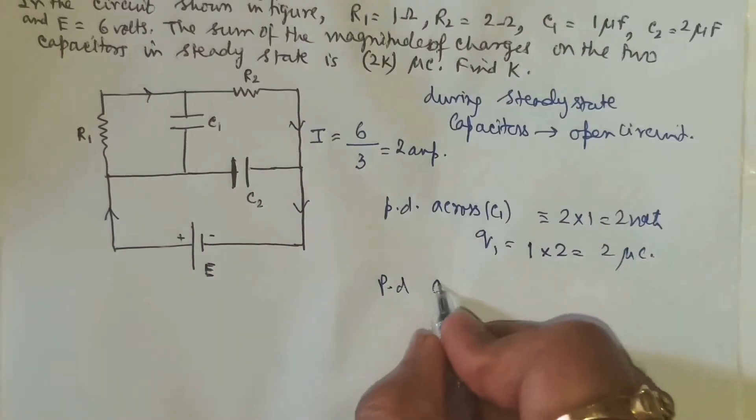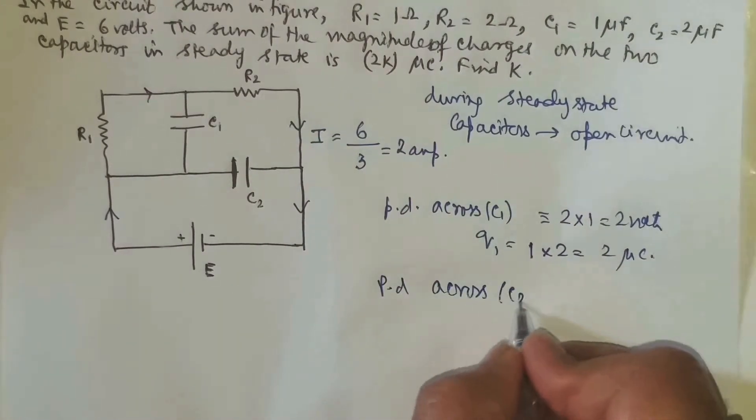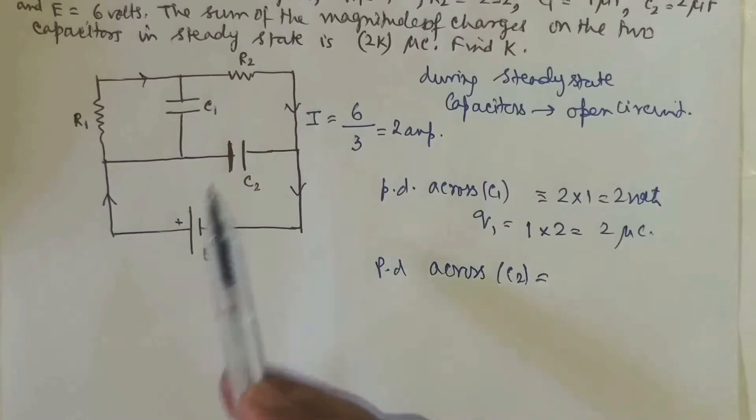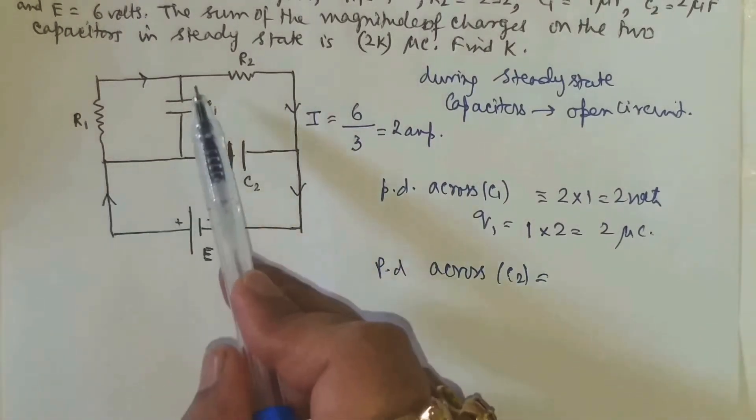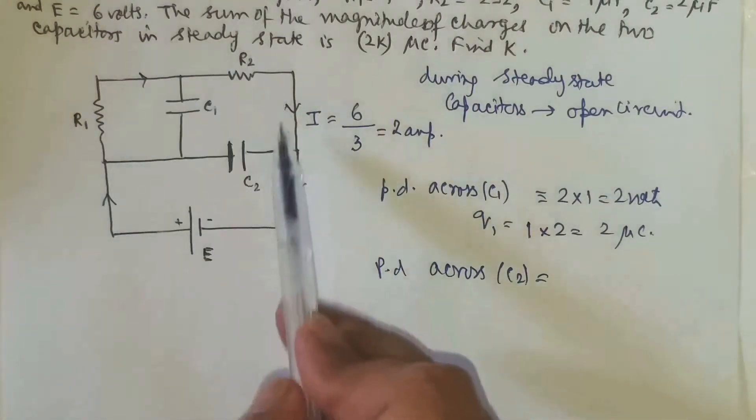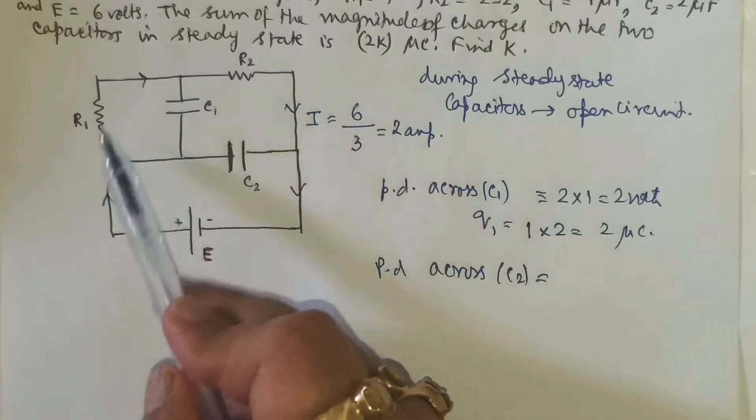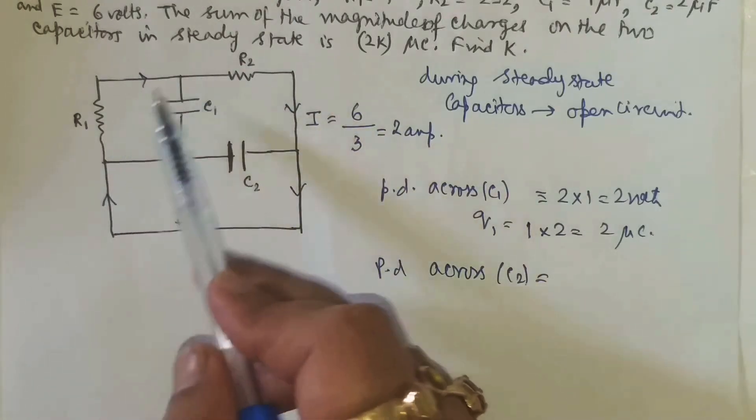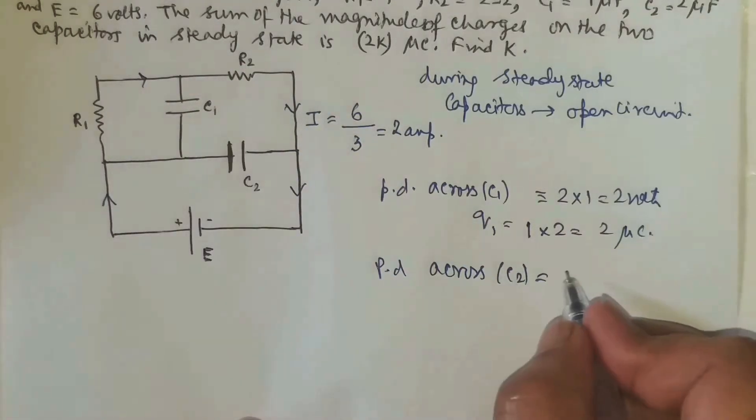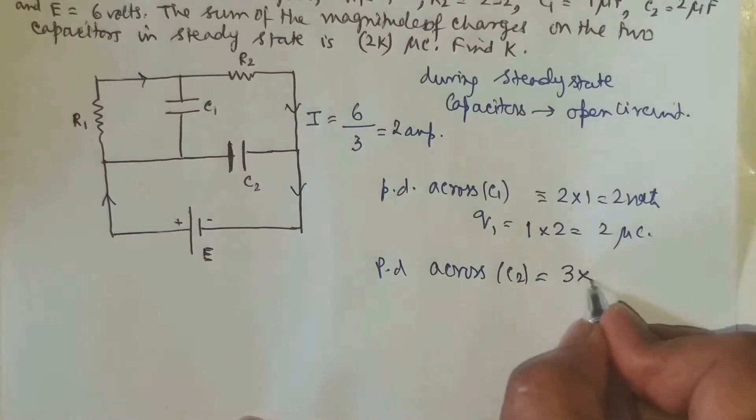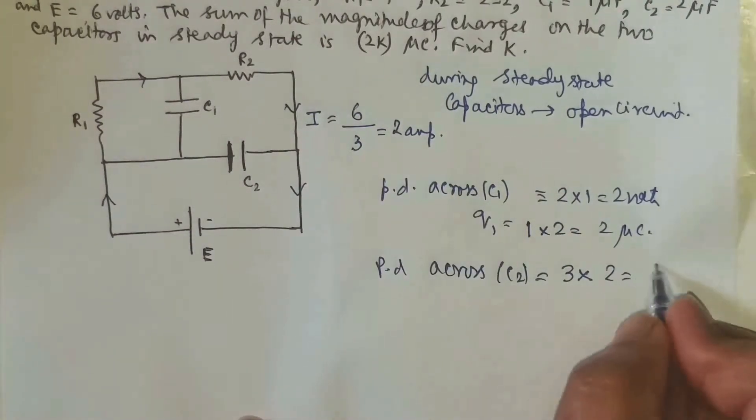Similarly what is the potential difference across C2? You can see that C2 is directly, imagine C1 is not there, it is directly connected across R1 and R2 combined in series, that is 3 ohm resistor, and the potential difference across 3 ohm resistance, current is 2, so this is 6 volts.